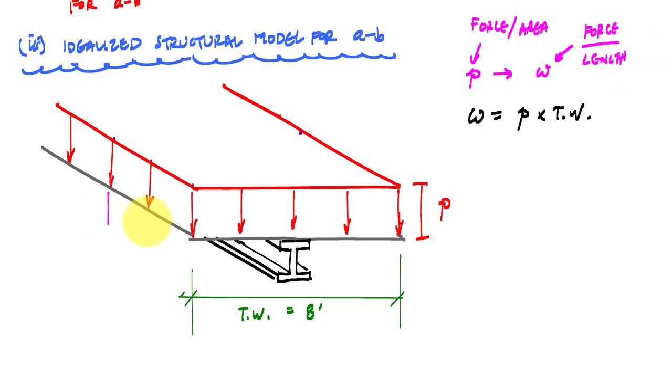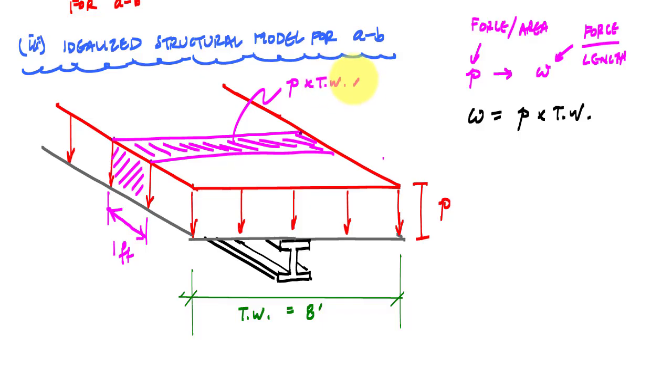And the way to think about force per unit length is, if I think about one foot of length of my beam, this pressure, if you will, this is one foot, then the force associated with that one foot is the volume of this purple block here. The volume is the pressure times the tributary width times one foot.